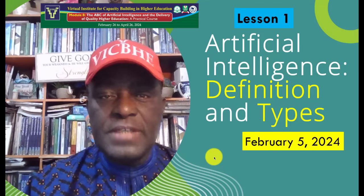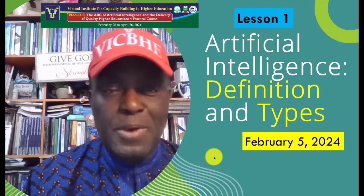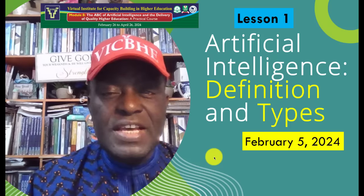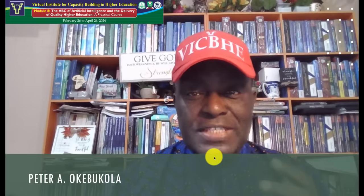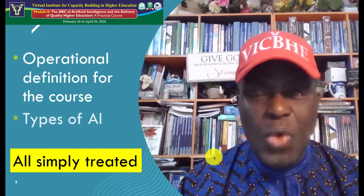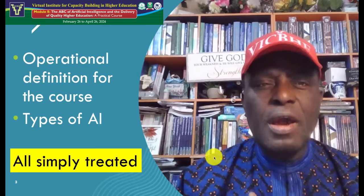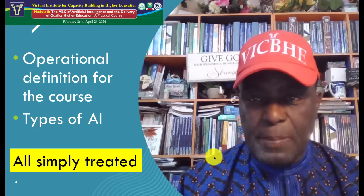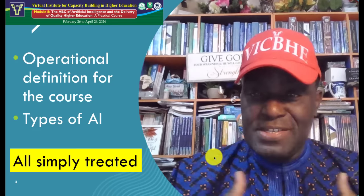Hello everyone, dear participants. In module eight, this is lesson number one — we're just warming up. We started on the 26th, and lesson number one is Artificial Intelligence: Definition and Types. Today is Monday, February 5th, and we have 21 more days to go. In this lesson, we are going to operationally define AI and then look at types of AI.